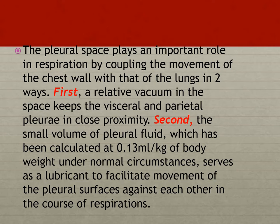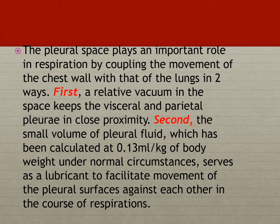First, there is a relative vacuum in the space which keeps the visceral and the parietal pleura in close proximity. Secondly, there is a small volume of pleural fluid, which is around 0.3 ml per kg of body weight under normal circumstances. This lubricant facilitates the movement of the pleural surfaces against each other without any friction or rub.